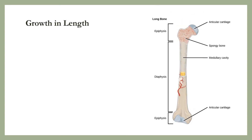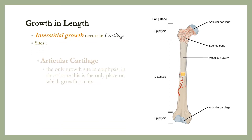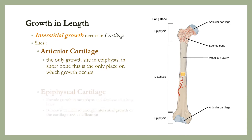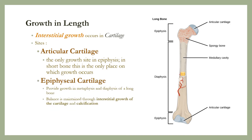Interstitial growth occurs in cartilage. The sites include articular and epiphyseal cartilage. The articular cartilage is the only growth site in the epiphysis; in short bones, this is the only place in which growth occurs. The epiphyseal plate provides growth in the metaphysis and diaphysis of a long bone. Balance is maintained through interstitial growth of the cartilage and calcification.